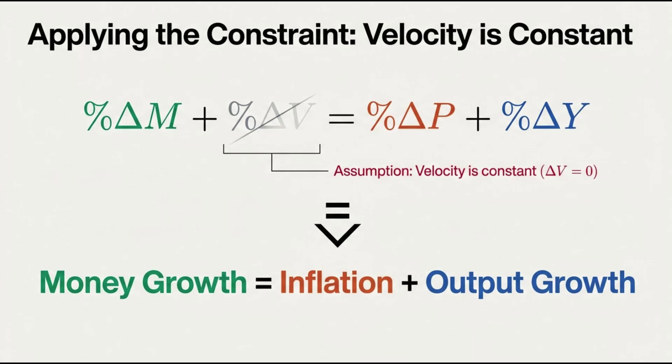So our delta M, the change in the money supply, is plus 5%. One variable down. Let's move on to the next piece of evidence. We also know something about the real economy, how much more stuff was actually made during this time.